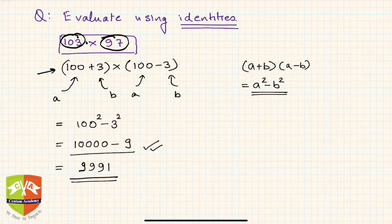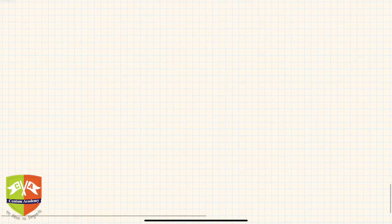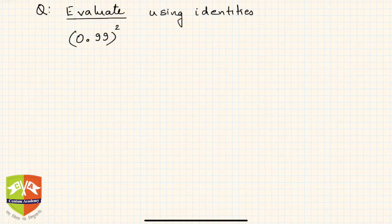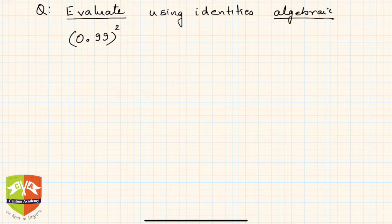Let us take another one to reinforce the learning. Here is another question: evaluate using identities again. What kind of identities? Algebraic identities. There are trigonometric identities and other identities as well.